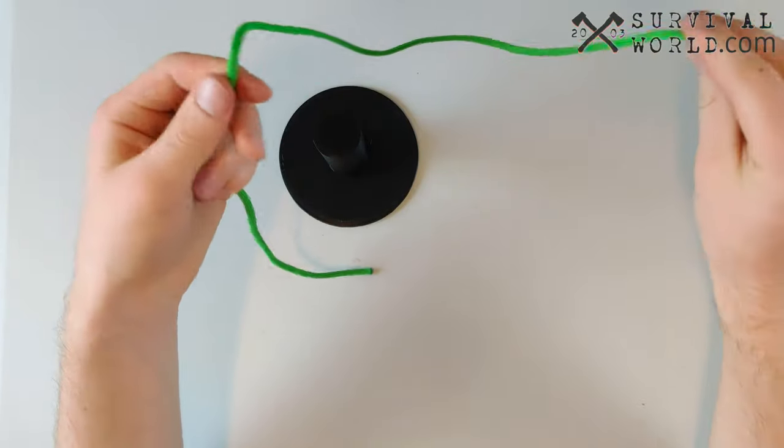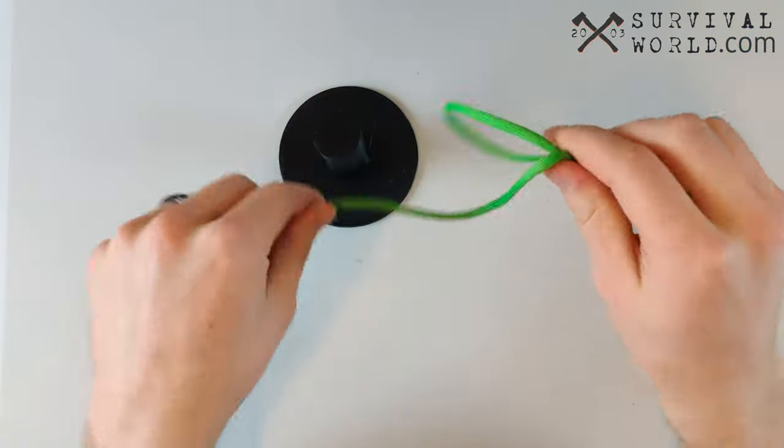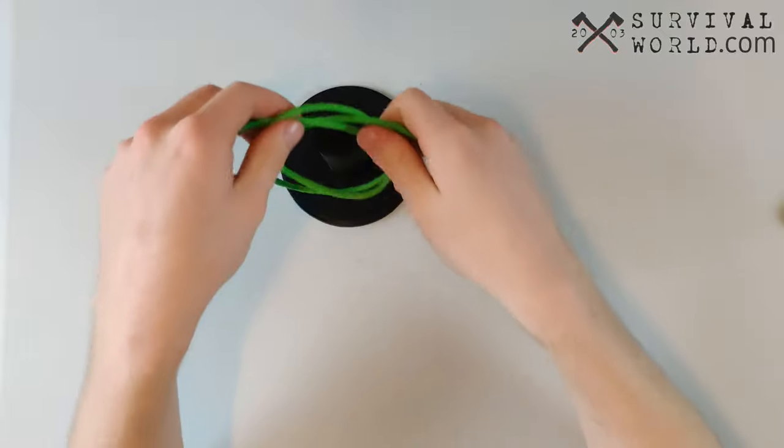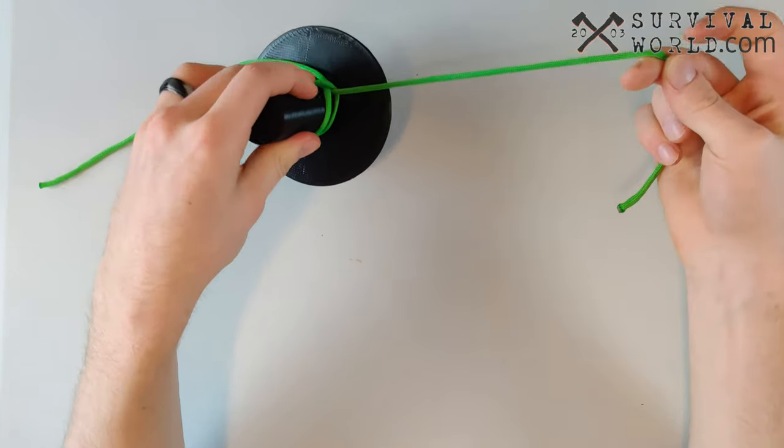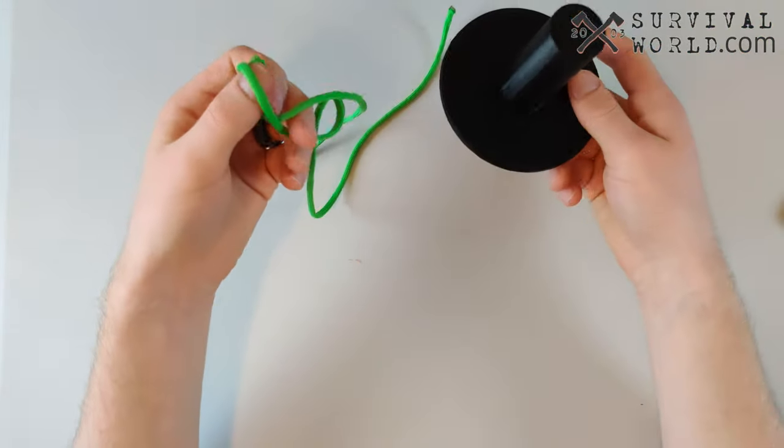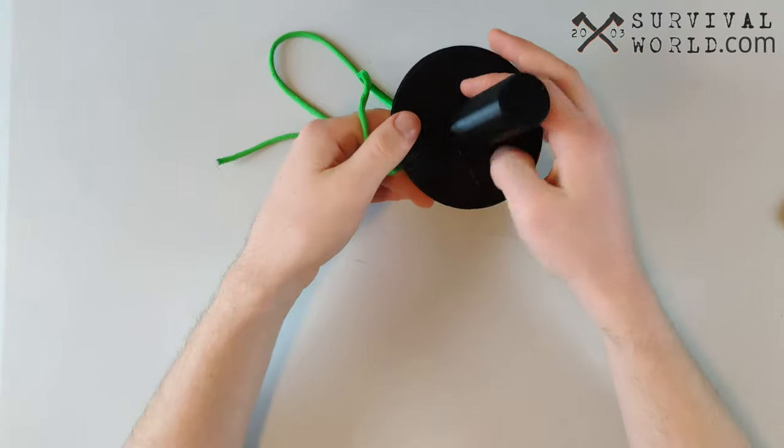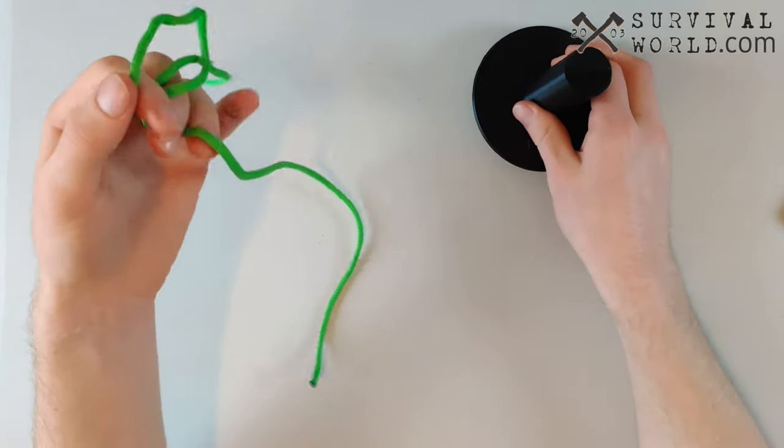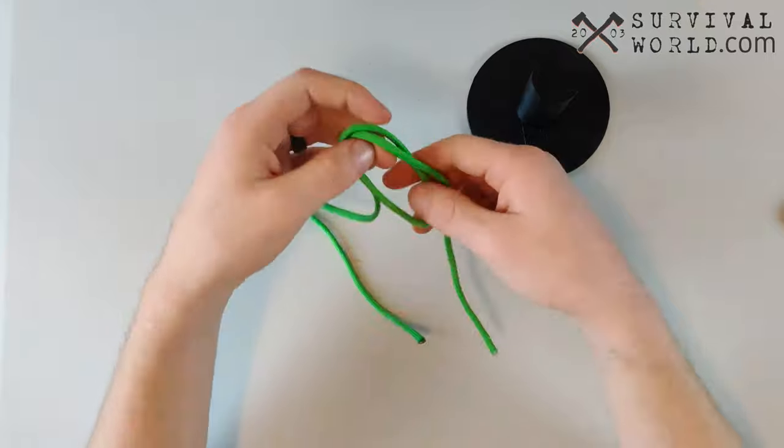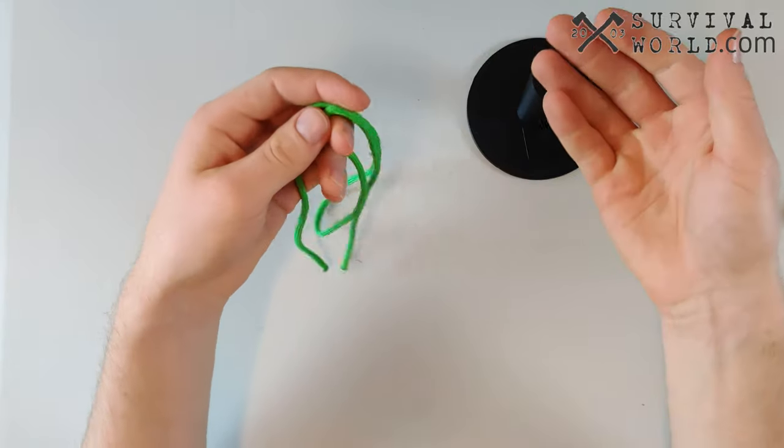You've seen the clove hitch in pretty much every movie ever. When someone's tying up a horse they'll just make a quick clove hitch, chuck it on the post, and leave their horse tied up. For camping and survival though, they're great to make a quick shelter if a storm is coming in, lash your canoe to a dock for a quick minute, or to haul gear up into a tree. It's just not that important to spend time on a more secure knot.